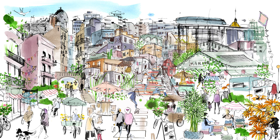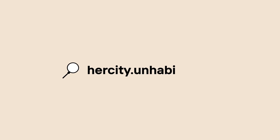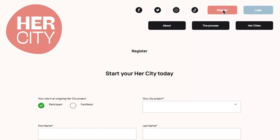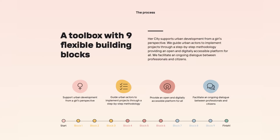I will show you how it works. Visit hercity.unhabitat.org. Register. Click Start. The Toolbox follows a unique process containing nine building blocks as a digital guideline on how to co-plan cities from a girl's perspective.